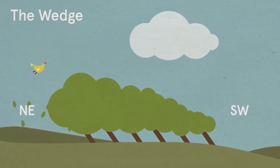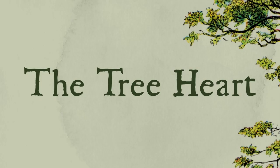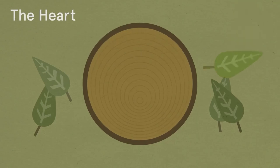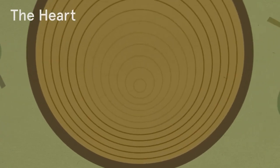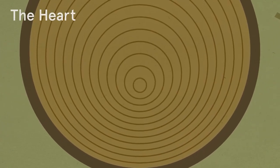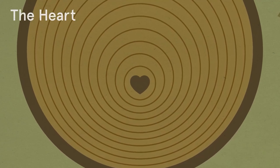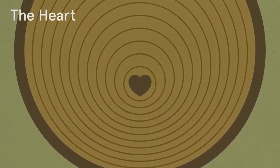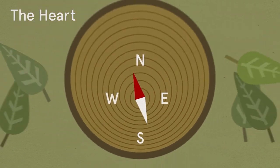Another useful navigational pointer can be found in the trunk of a felled tree. If you follow the rings of the tree towards the middle, you'll find the heart. This is the point where the rings are smallest, and it will tend to be nearer the southern edge of the stump.